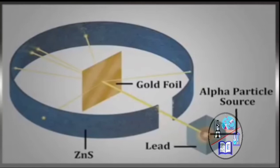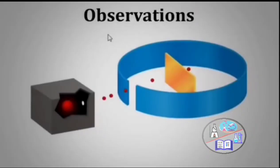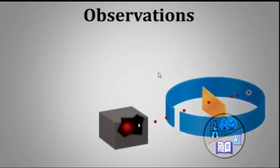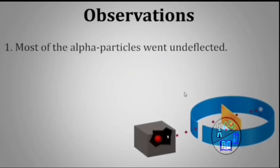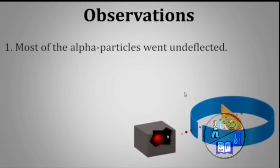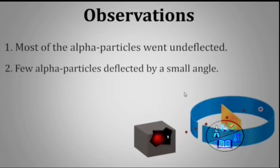Now let's see what observations he did in his experiment. The first observation he made was most of the alpha particles went undeflected and hits straight to the zinc sulfide screen producing the glow. The second was few alpha particles deflected by a small angle instead of moving in the straight line.